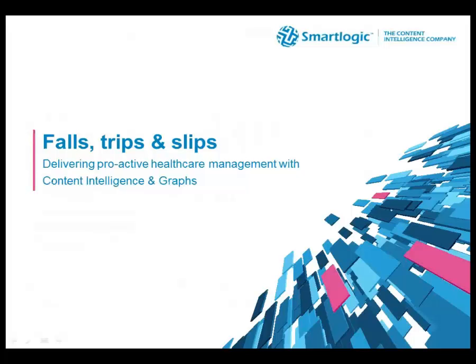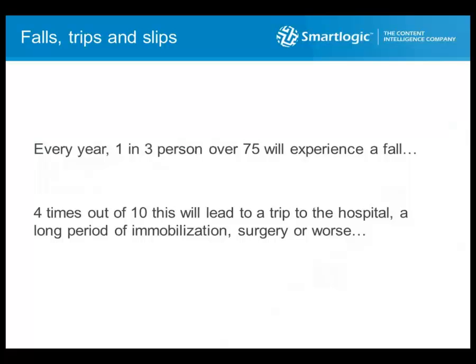In the final part of this webinar, I'm going to walk through a healthcare management scenario I've called 'Falls, Trips and Slips' — a term from the UK National Health Service ontology. The NHS is using Semaphore to power content discovery on their public health portal, serving 65 million citizens in the UK. Every year, one in three persons over 75 years old will experience a fall, and four times out of ten this will lead to a hospital trip, a long period of immobilization, surgery, or worse. Clinical studies have identified four main categories of risk factors: demographic factors, historical factors, physical deficits, and environmental hazards.